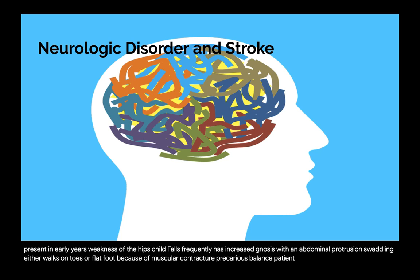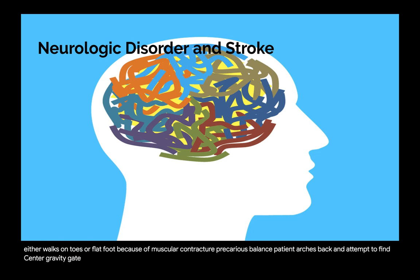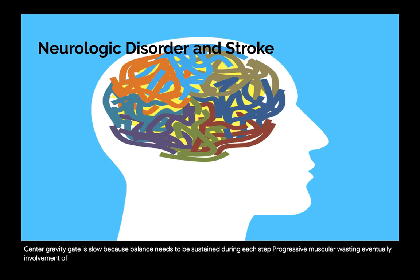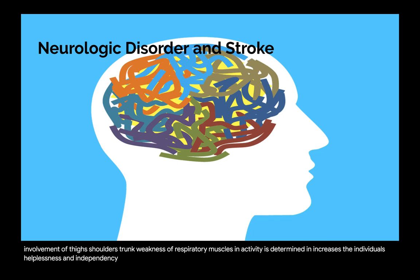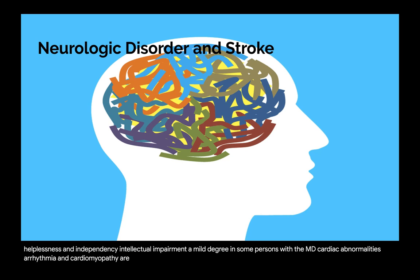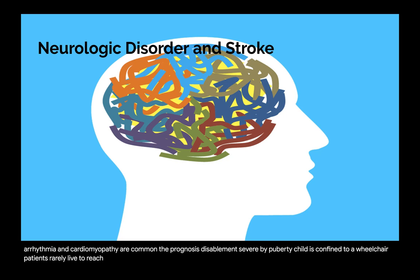The patient has precarious balance, arches back to find the center of gravity, and gait is slow because balance must be sustained during each step. Inactivity is detrimental and increases the individual's helplessness and dependency. A mild degree of mental impairment is noted in some persons with DMD. Cardiac abnormalities, arrhythmia, and cardiomyopathy are common. By puberty, disablement is severe and the child is confined to a wheelchair. Patients rarely live to reach their third decade.